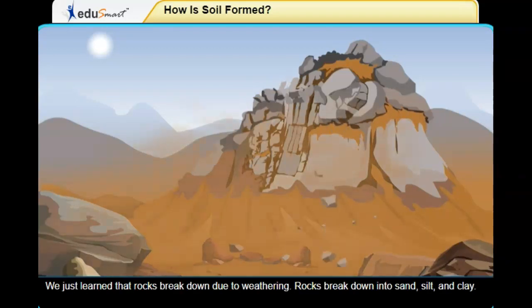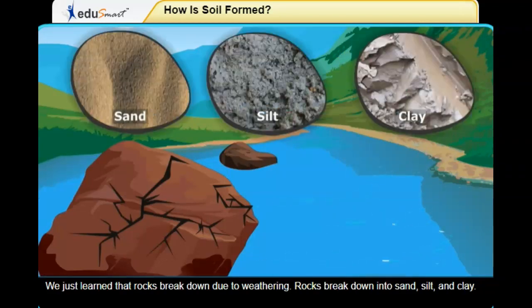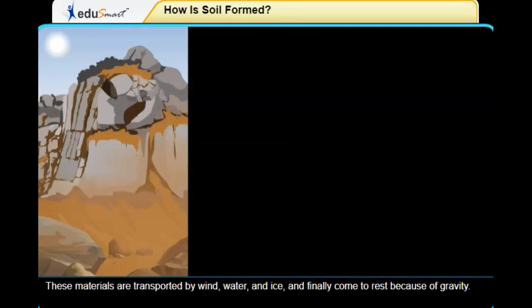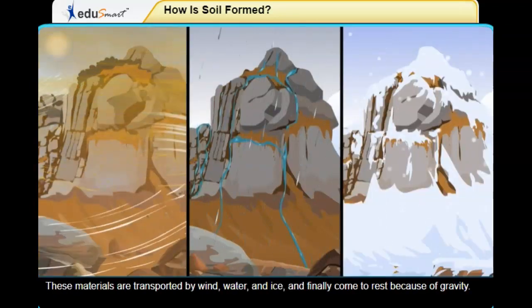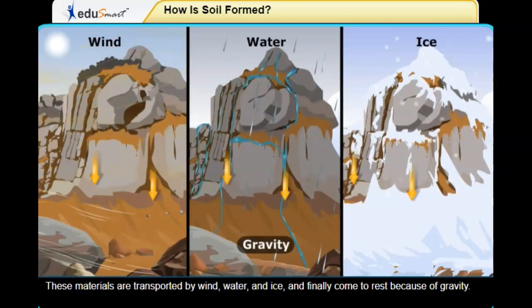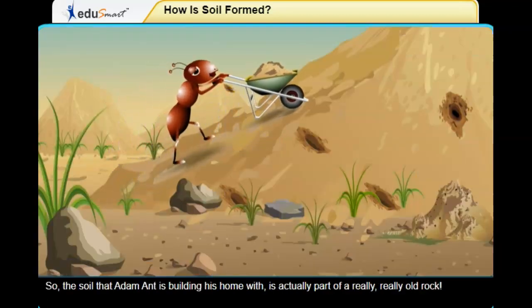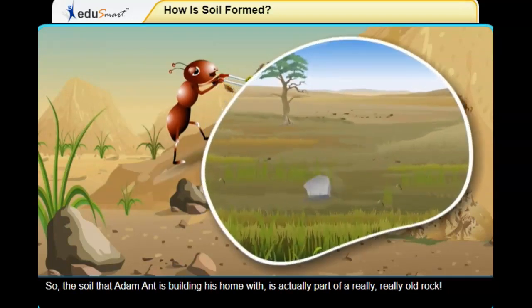We just learned that rocks break down due to weathering. Rocks break down into sand, silt, and clay. These materials are transported by wind, water, and ice, and finally come to rest because of gravity. So, the soil that Adam Ant is building his home with is actually part of a really, really old rock.